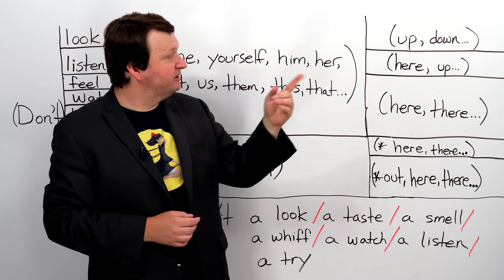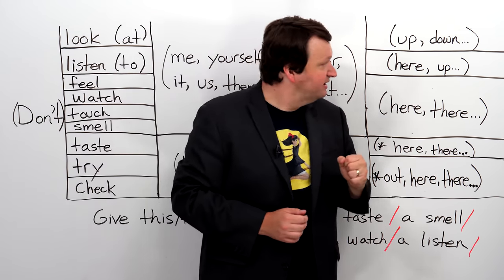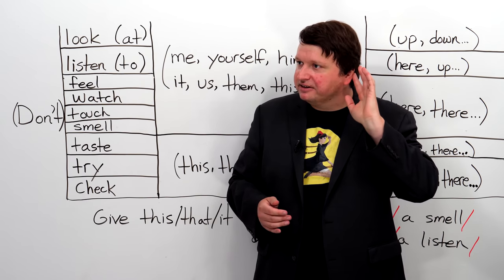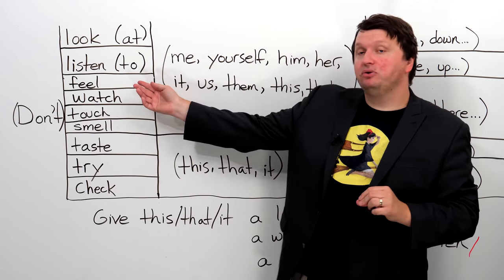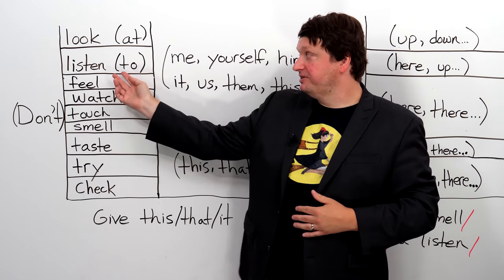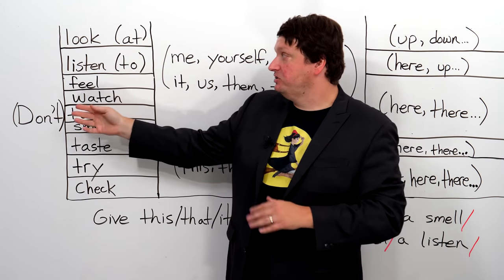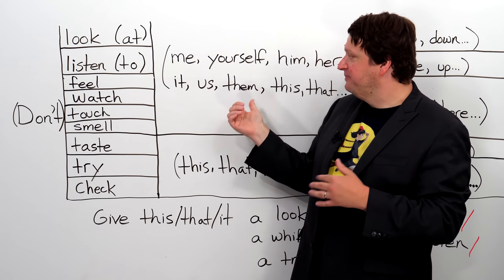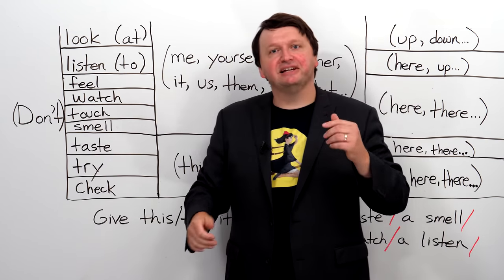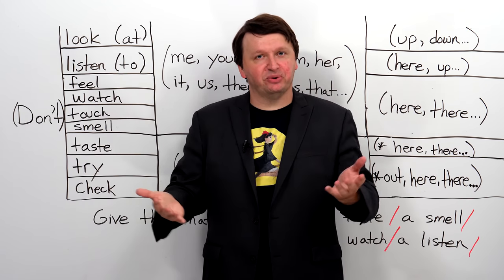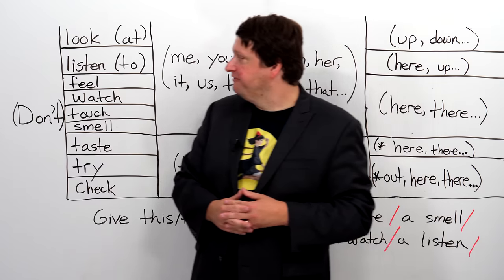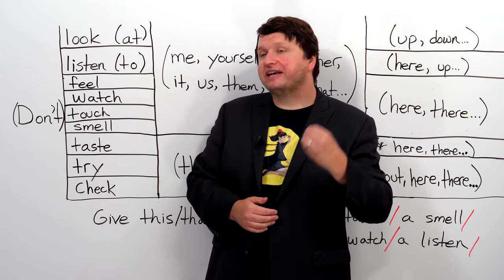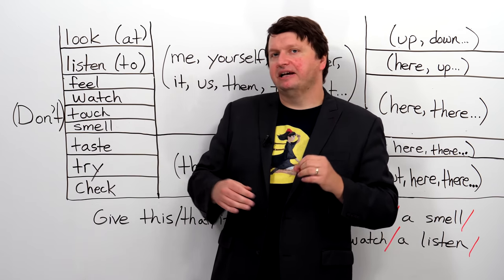Next we have listen. You could just say, shh, listen — do you hear that? If you want to listen to a particular thing, you use to: don't listen to me, don't listen to him, her, or them. Or listen to this, if you have a new song on your phone. So you can direct people to listen to specific things — listen to this, listen to her.